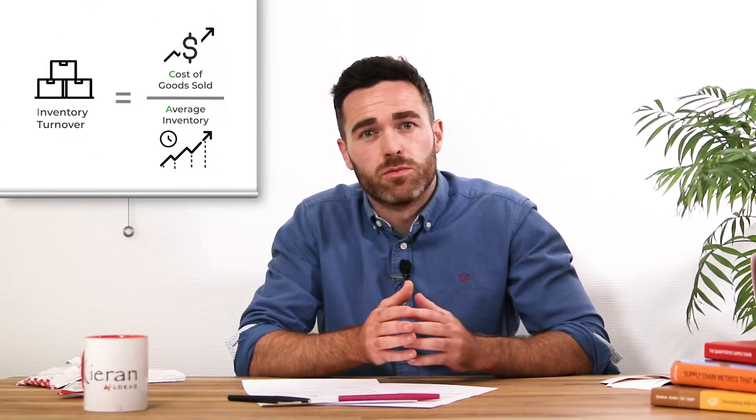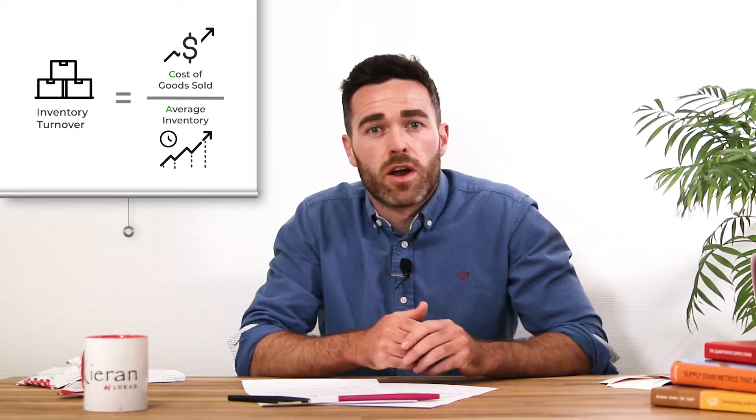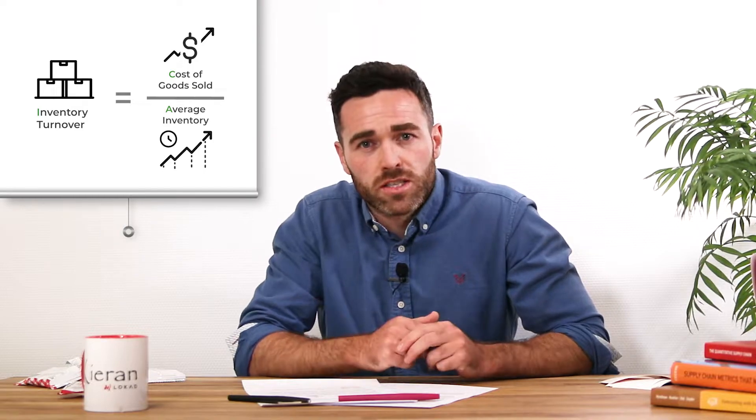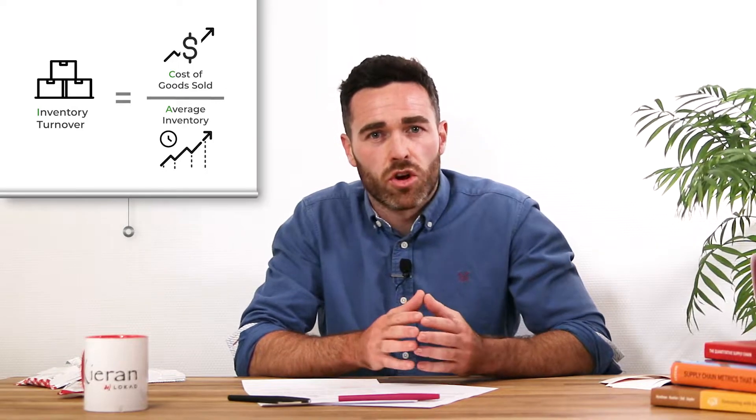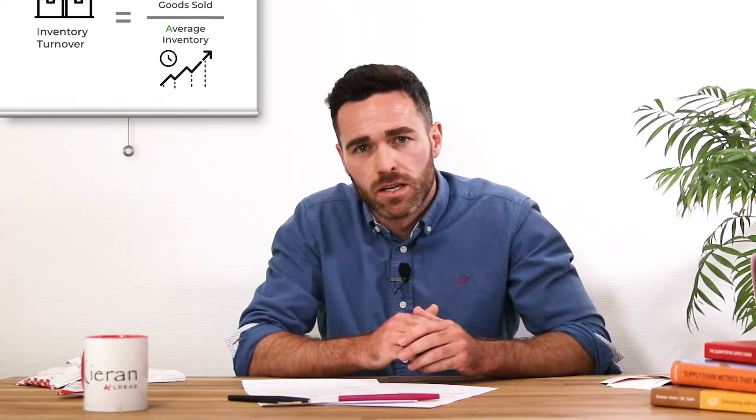So what does this magic formula look like? Numerically, inventory turnover is calculated as the ratio between the cost of goods sold divided by the cost price of the average stock level over the same time period.